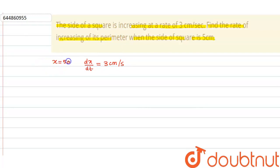Now it is asking about the rate of increasing of its perimeter. Now we know that perimeter of a square is equal to 4 into side, that means 4x. Now if I denote perimeter as P, so P is equal to 4x.